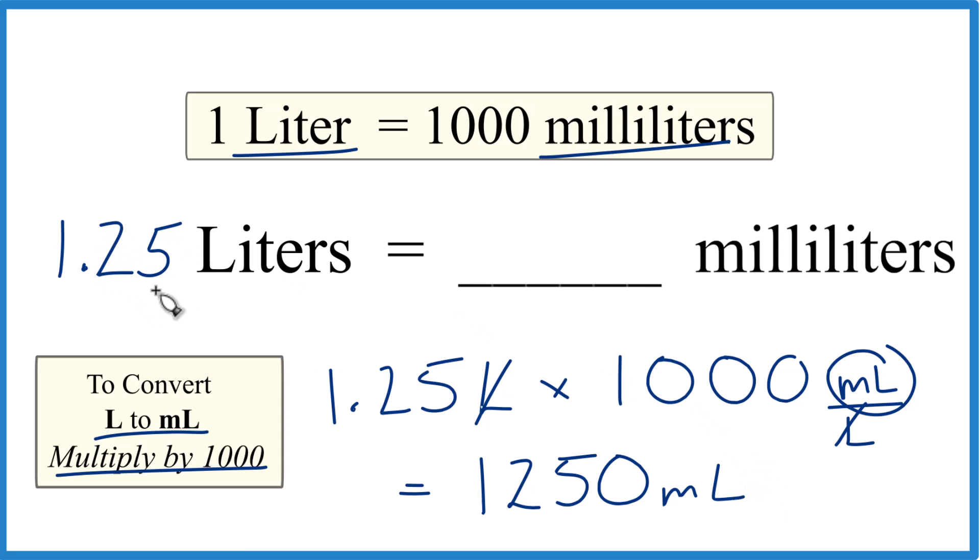So in answer to our question, 1.25 liters equals 1,250 milliliters.